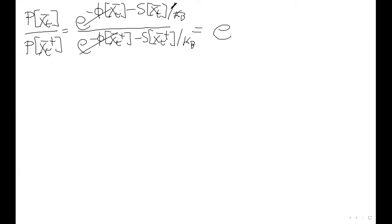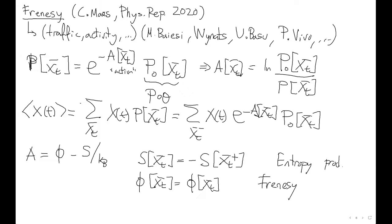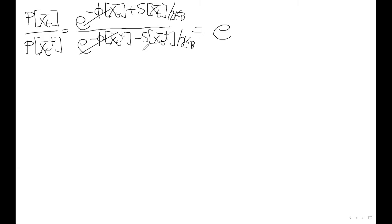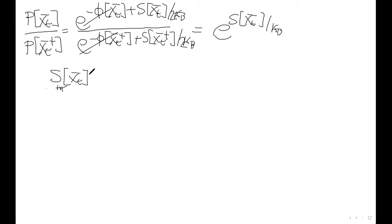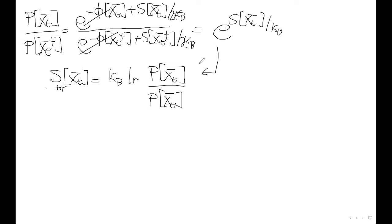This is consistent with the definition I introduced in the course: S(x_t) equals k_B times the logarithm of the probability for the forward trajectory divided by the probability for the time-reversed trajectory. If instead you multiply the two path probabilities, the entropy production cancels and you get an expression involving minus 2 phi(x_t). So the frenesy is related to minus the logarithm of the geometric mean of P(x_t) and P(x_t-reversed).